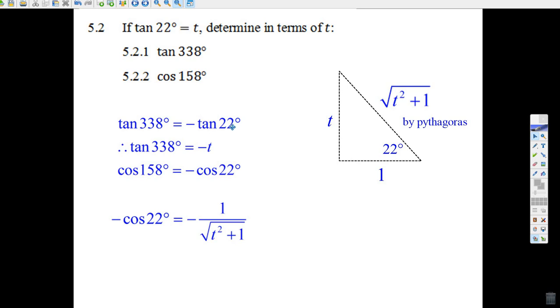But in that fourth quadrant, you have to know tangent's negative. So the tangent of 338 is really the tangent of 22, but it's negative. But we were told that the tangent of 22 is t, so the answer is minus t.